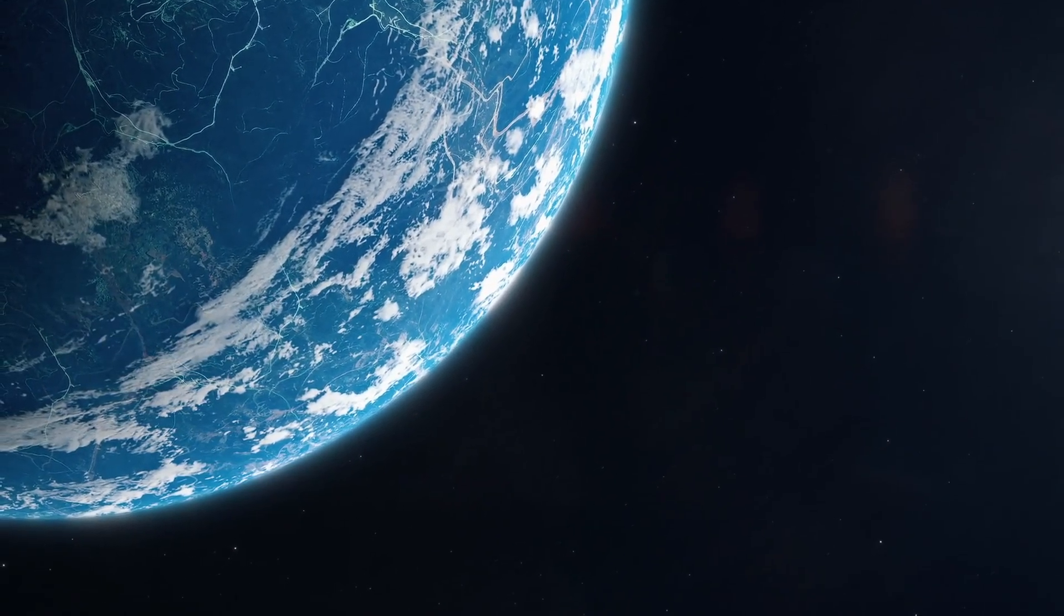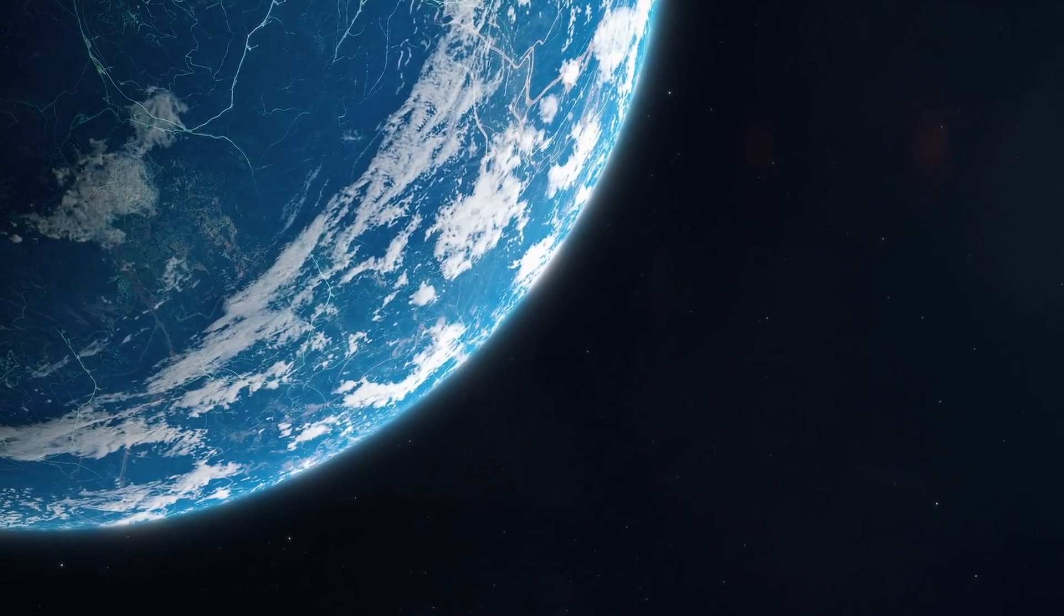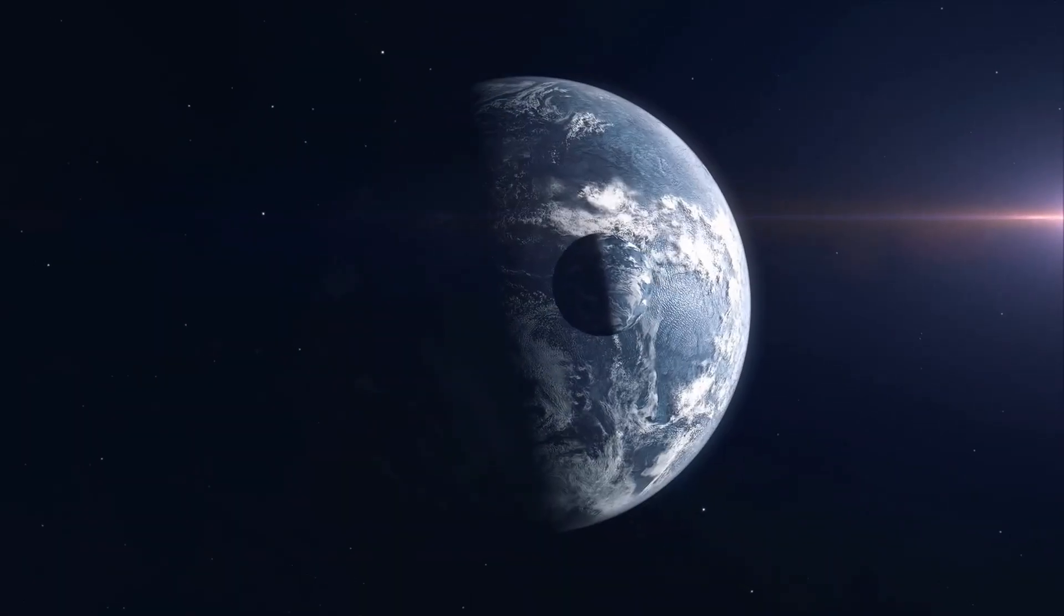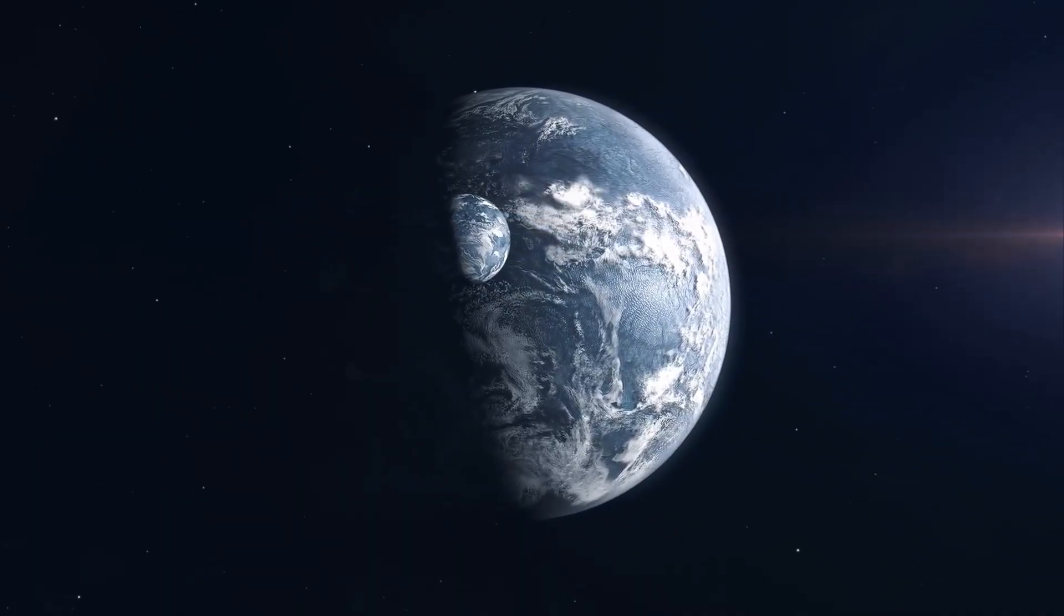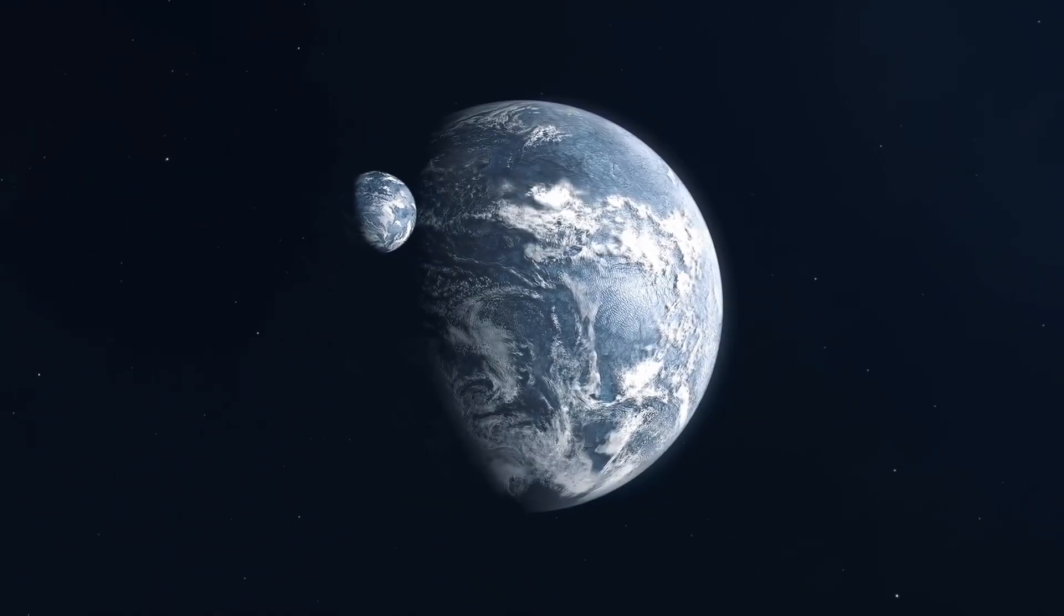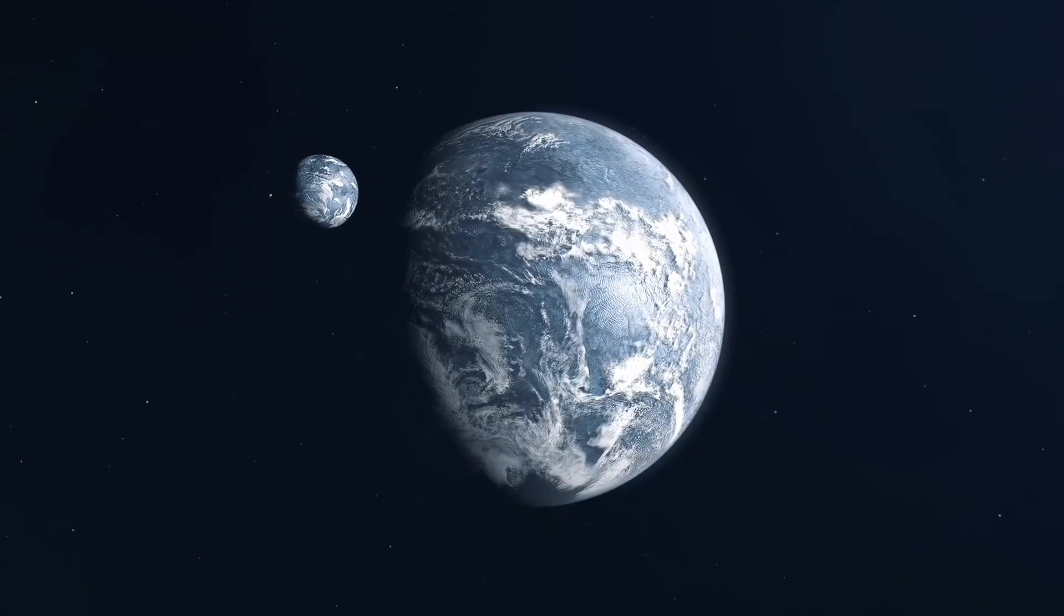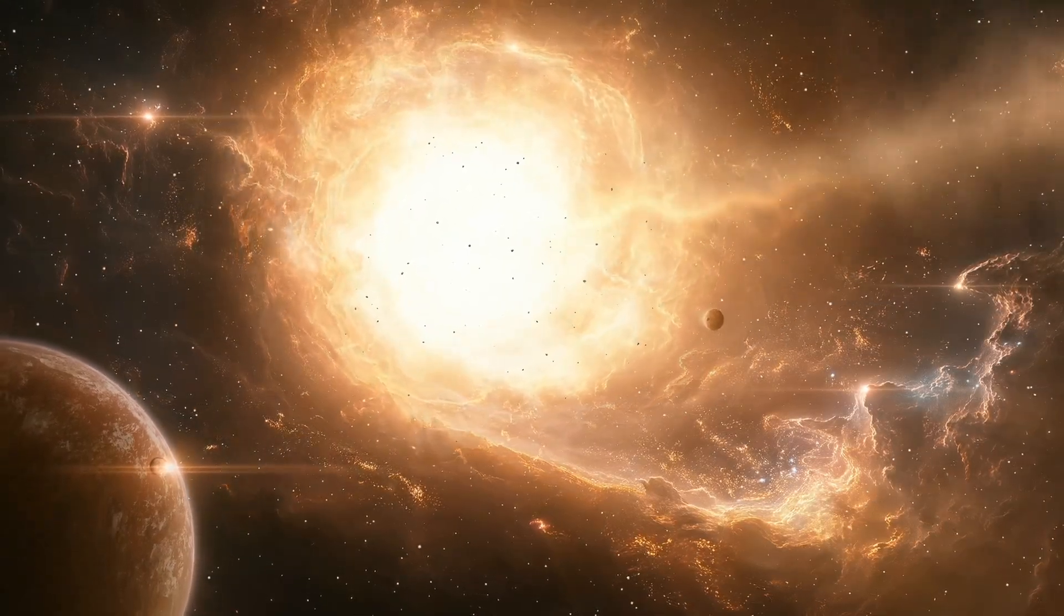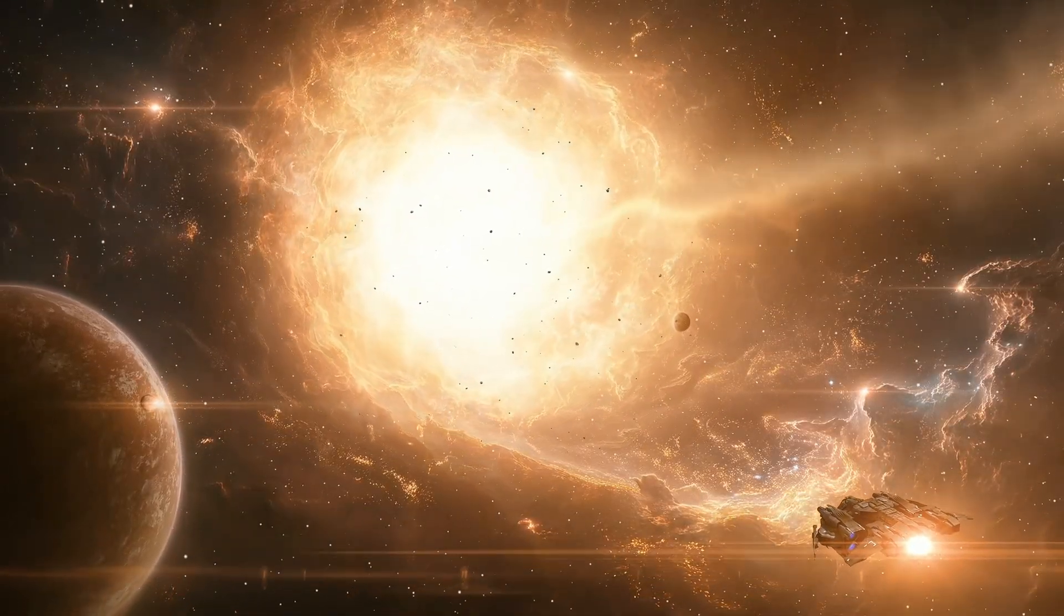A young galaxy glows blue with hot, massive stars that live fast and die violently. An old galaxy fades to red, filled with long-lived suns burning quietly. In the hearts of some galaxies, supermassive black holes feed on surrounding gas, releasing jets of energy that stretch thousands of light-years, powerful enough to heat or even expel gas from the galaxy itself. These active galactic nuclei regulate growth, acting as cosmic thermostats.